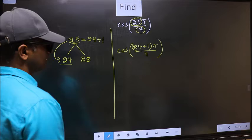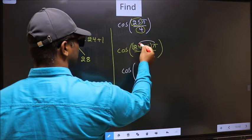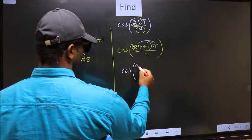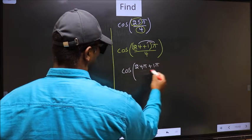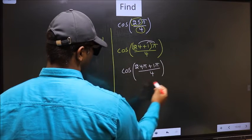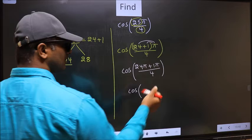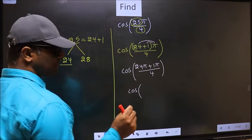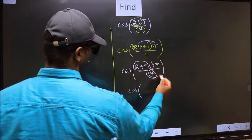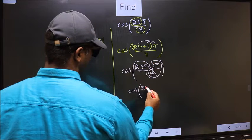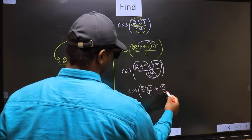Next. Cos. Now you should open up the brackets. You get 24 pi plus 1 pi by 4. Cos. Now in this, you should split the denominator in this way. That is 24 pi by 4 plus 1 pi by 4.